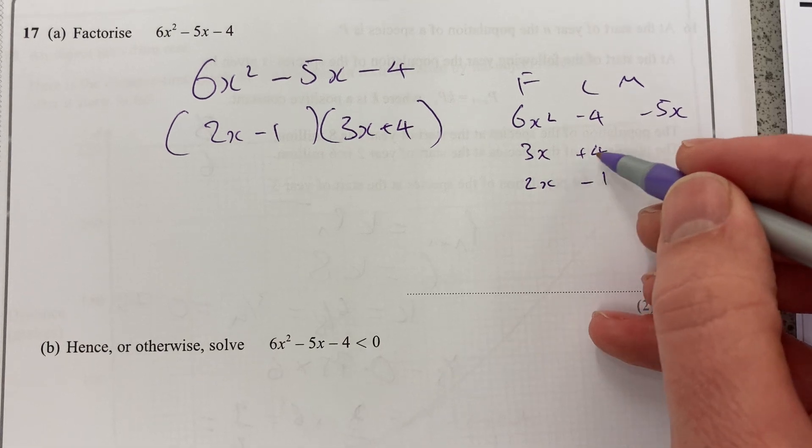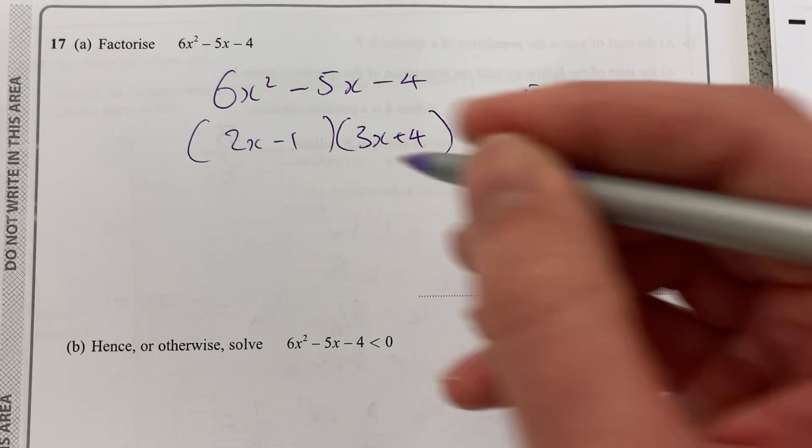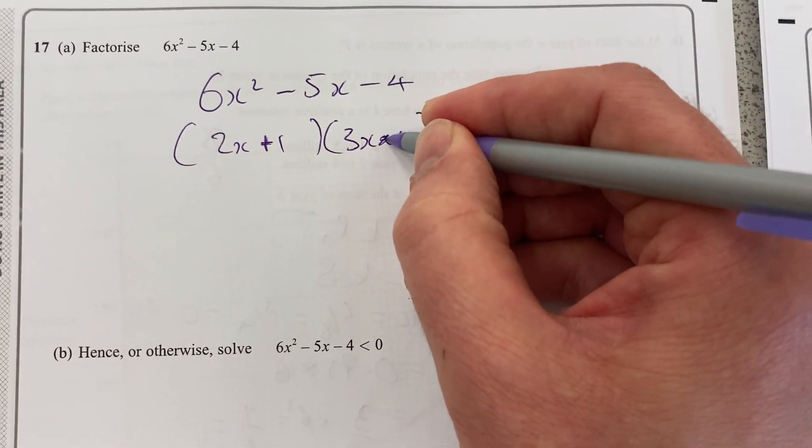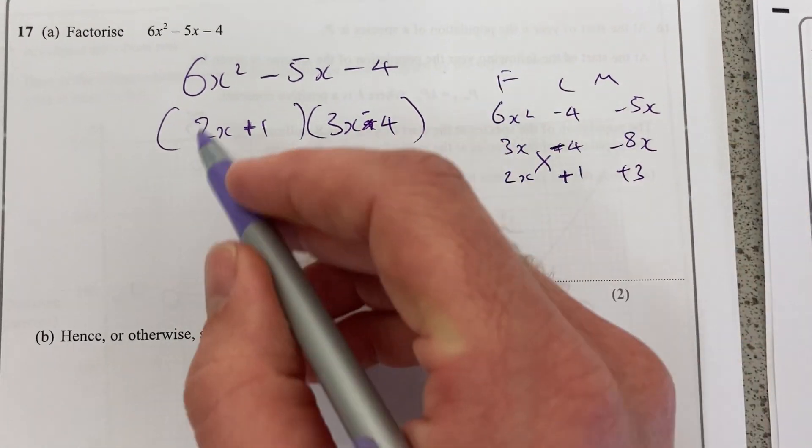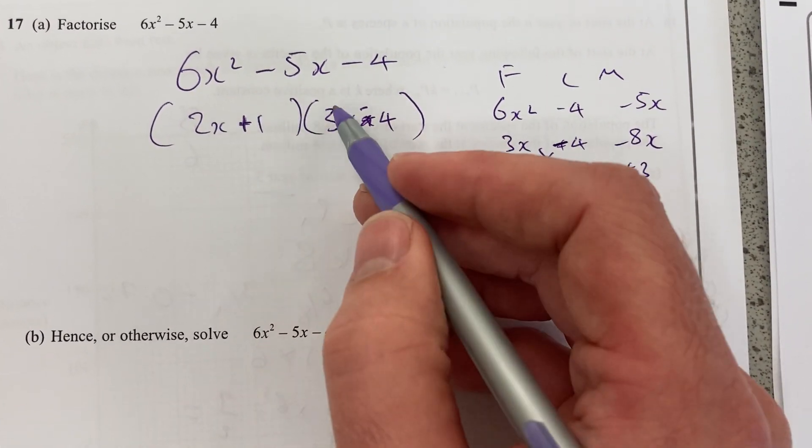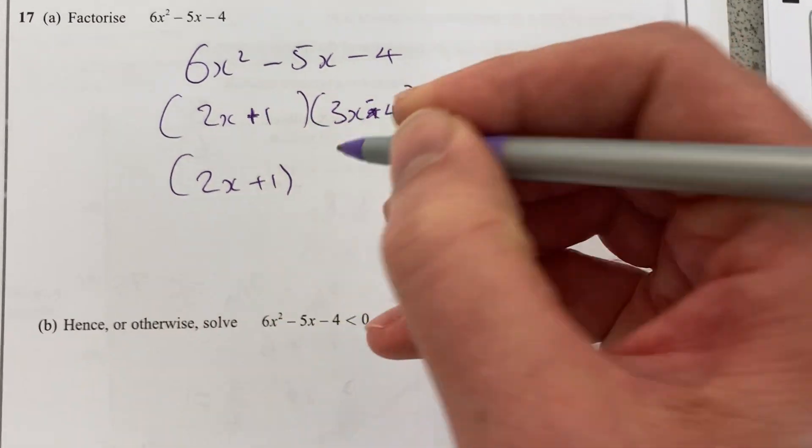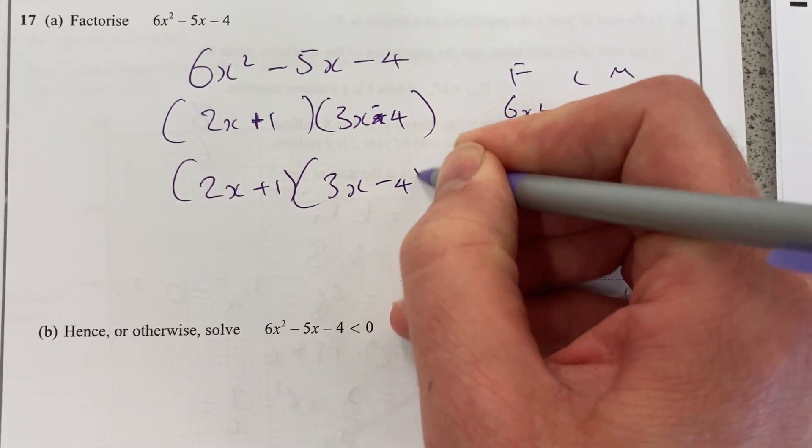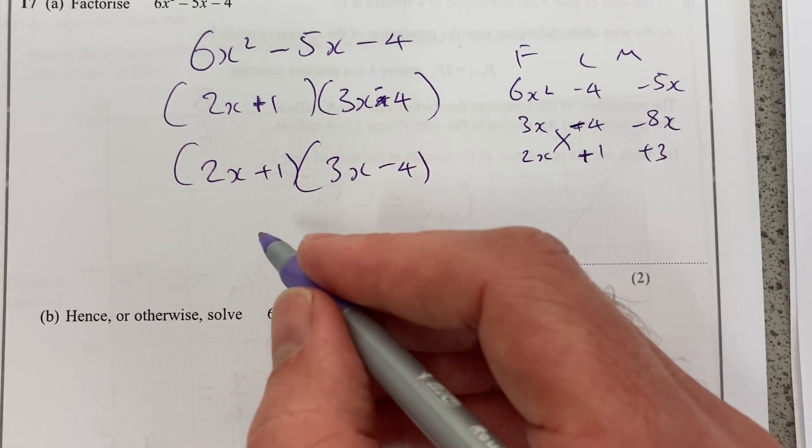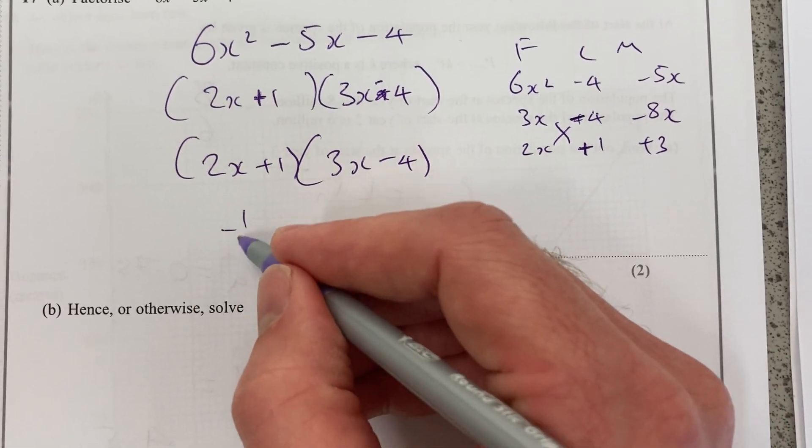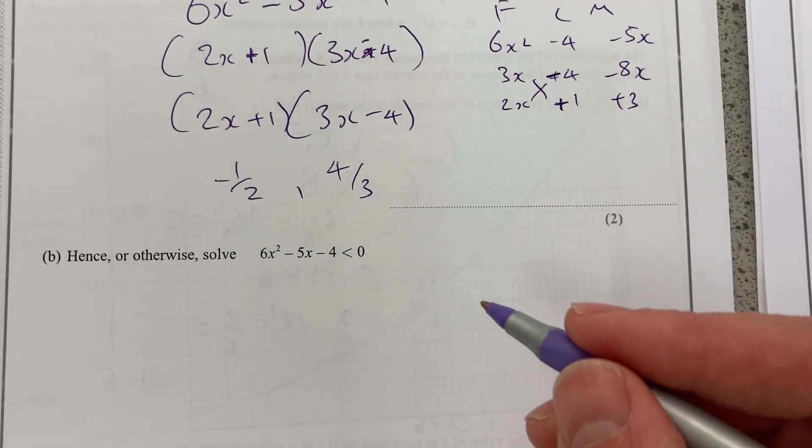If I just check that around. Oh no, sorry, that works. I need to get the signs the other way around. That'll be 8x minus 3. I want it the other way around. Do check your answer as soon as you can. I want it to be plus 1 and minus 4, because that would have given me minus 8x plus 3. Always multiply to check. 6x squared minus 8x plus 3x. So I'll write that again, 2x plus 1, 3x minus 4. Now, to help us with the next question, I'm actually going to find out where those would cut the x-axis. That would be at minus a half, and that'll be at 4 over 3.